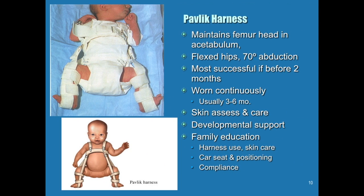In the little ones, we use what we call a Pavlik harness. It abducts the legs 70 degrees and keeps the head of the femur in the acetabulum. It's most successful if implemented before two months of age. If we don't find it at the newborn exam, we check again at two weeks and at the two-month visit — any time we feel an abnormality, we begin the Pavlik harness. They wear it for up to six months, all day every day. The only time it comes off is for a bath. You do have to watch for skin breakdown, and that will be part of your family education.